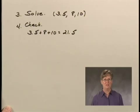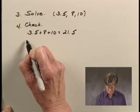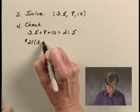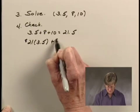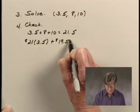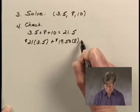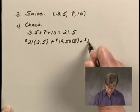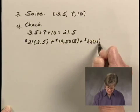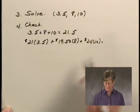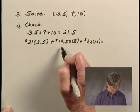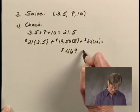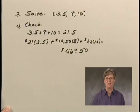We also need to check the total amount that was earned, and that would be $21 times 3.5 hours plus $19.50 per hour times 8 hours plus $24 per hour times 10 hours, and when I do this computation, I get the total amount that was earned, which was $469.50, so that checks as well.